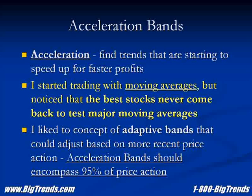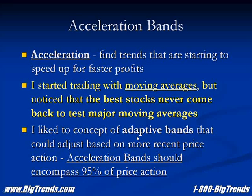And the same thing on the downside — when stocks are starting to accelerate to the downside, we know that stocks move down faster than they move up, and you get these kind of waterfall declines, as I'll show you in some examples today. So I started testing the idea of adaptive bands that could adjust based on more recent price action. I looked at Bollinger Bands, Bomar Bands, Keltner Channels — I've looked at a lot of different types of bands, but what I found most effective for me was the Acceleration Bands idea.